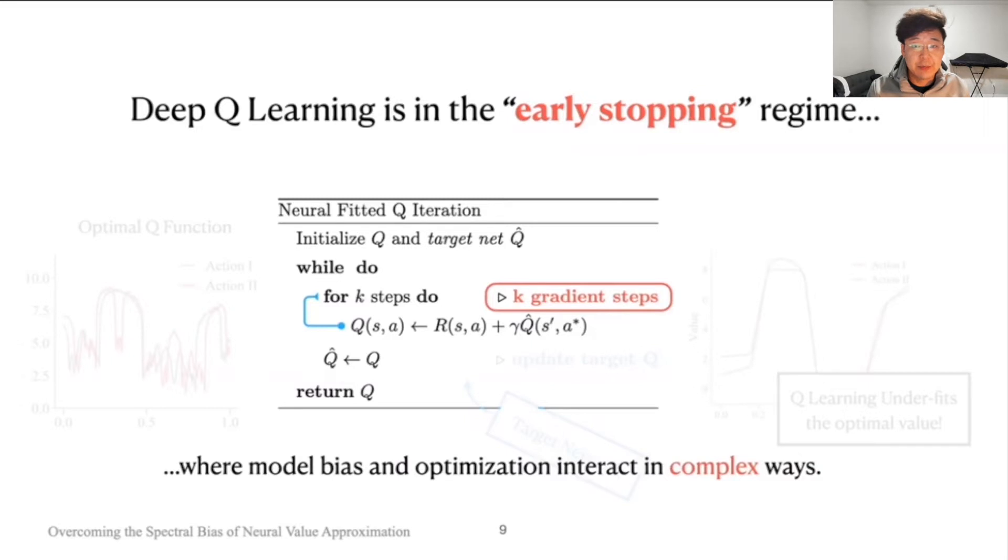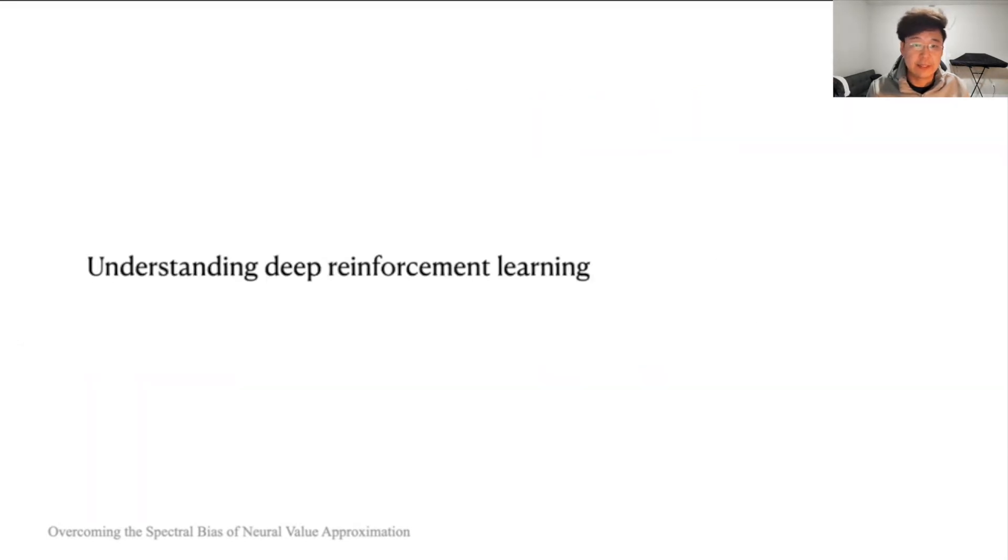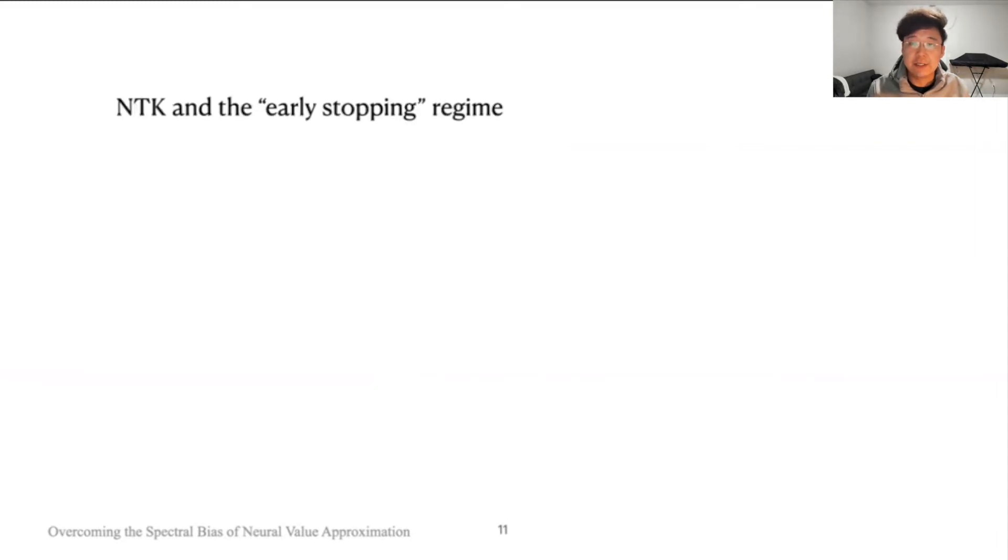And this is the regime where model bias and optimization interact in fairly complex ways. Therefore to understand deep reinforcement learning with neural value approximators, we need to first understand supervised learning under the early stopping regime.